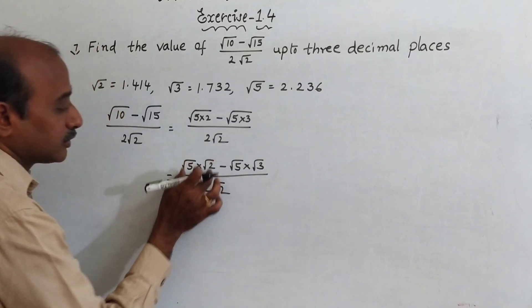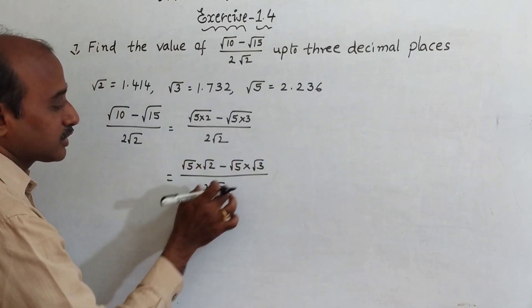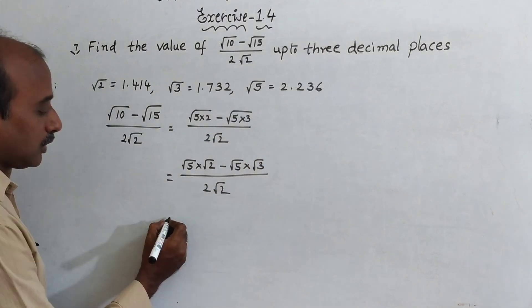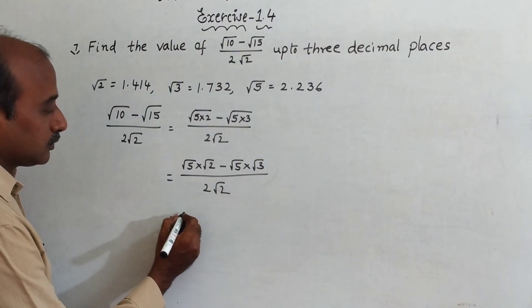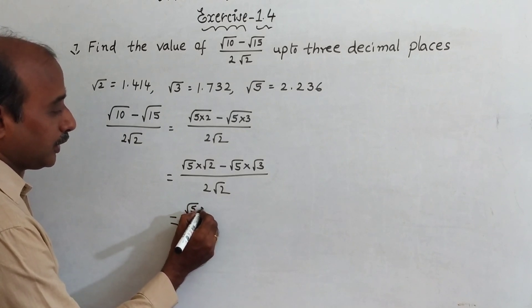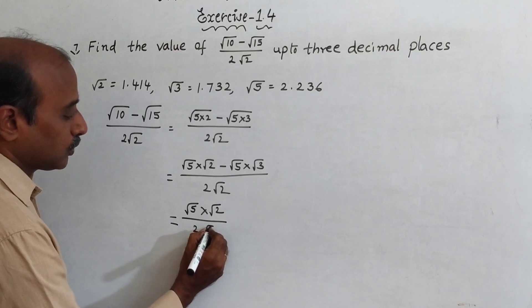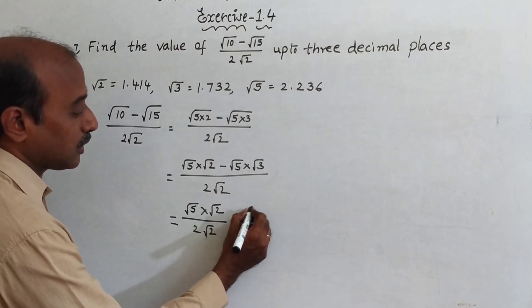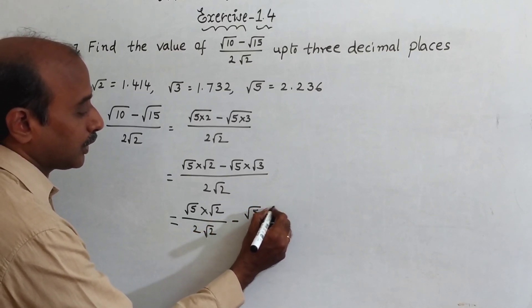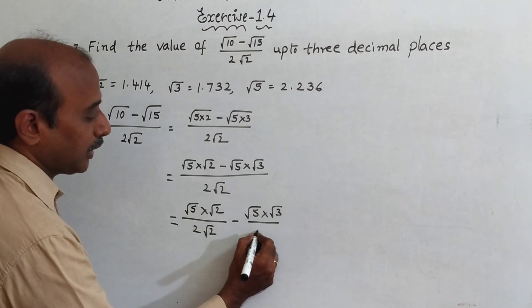Now you can divide, split into 2 parts. Divide this by this, this by this. That is equal to root 5 into root 2 by 2 root 2 minus root 5 into root 3 by 2 root 2.